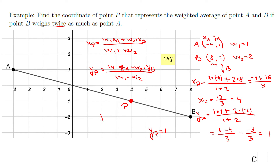Yes, we got the Y coordinate of point P as negative 1. So the point P is located at 4 and negative 1.